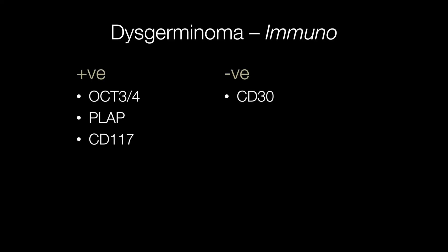The immunoprofile of dysgerminomas is the same as seminomas: OCT3-4 will be positive, placental alkaline phosphatase (PLAP) is positive, and CD117 is positive, while CD30 is negative.